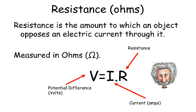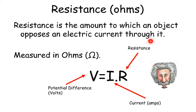Resistance is the amount to which an object opposes an electric current passing through it, measured in ohms. The equation is V equals I times R, where V is the potential difference across a conductor, I is the current flowing through it, and R is the resistance measured in ohms.